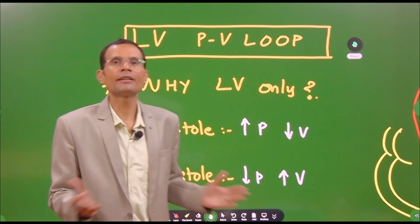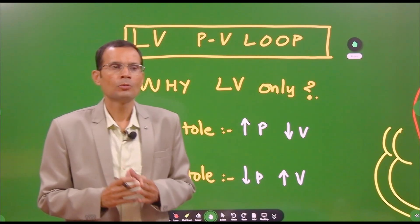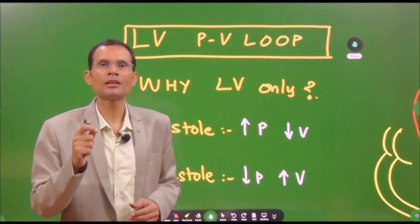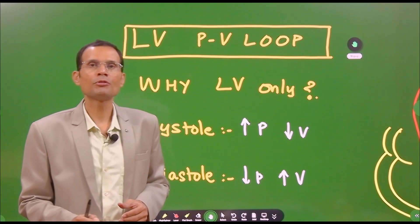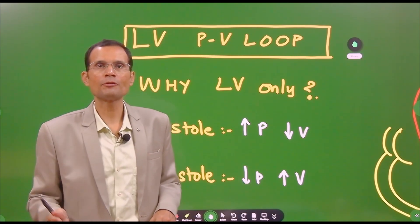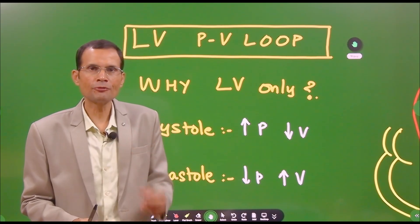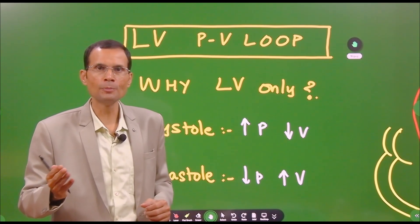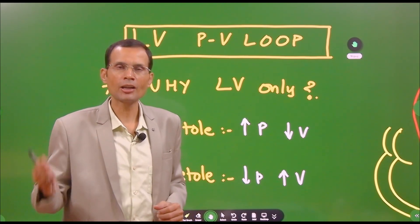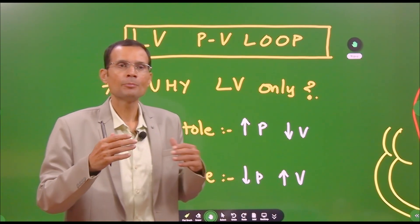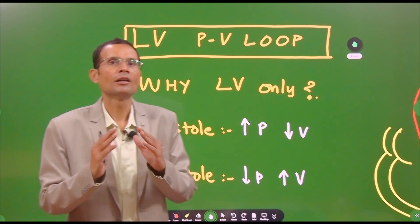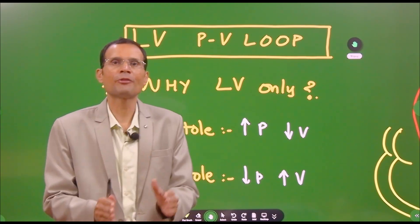First, why the left ventricle only? The answer is simple. It is the left ventricle which is the real workhorse. It's the left ventricle which generates the pressure wave transmitted along the vascular tree, and it's the left ventricle which ejects the blood volume that circulates throughout the body as cardiac output, reaching every part of the body, every cell. Therefore, we are interested in the pressure-volume changes in the left ventricle.